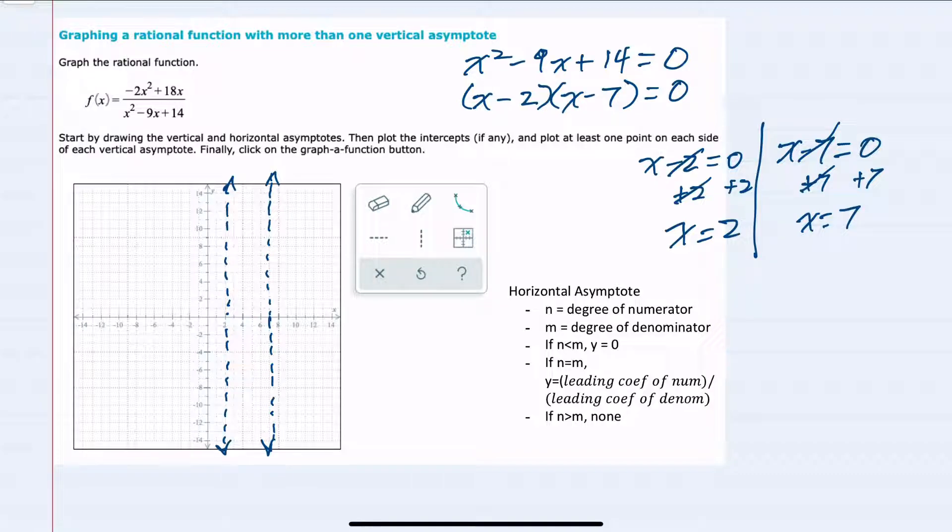For horizontal asymptotes, we look at the degree of the top, which is 1, here that degree is 2, and the degree of the bottom, which here is also 2. And whenever those degrees are equal, our horizontal asymptote is y equals the leading coefficient of the numerator, which is negative 2, over the leading coefficient of the denominator, which here is 1, so negative 2 over 1, y equals negative 2, is our horizontal asymptote.